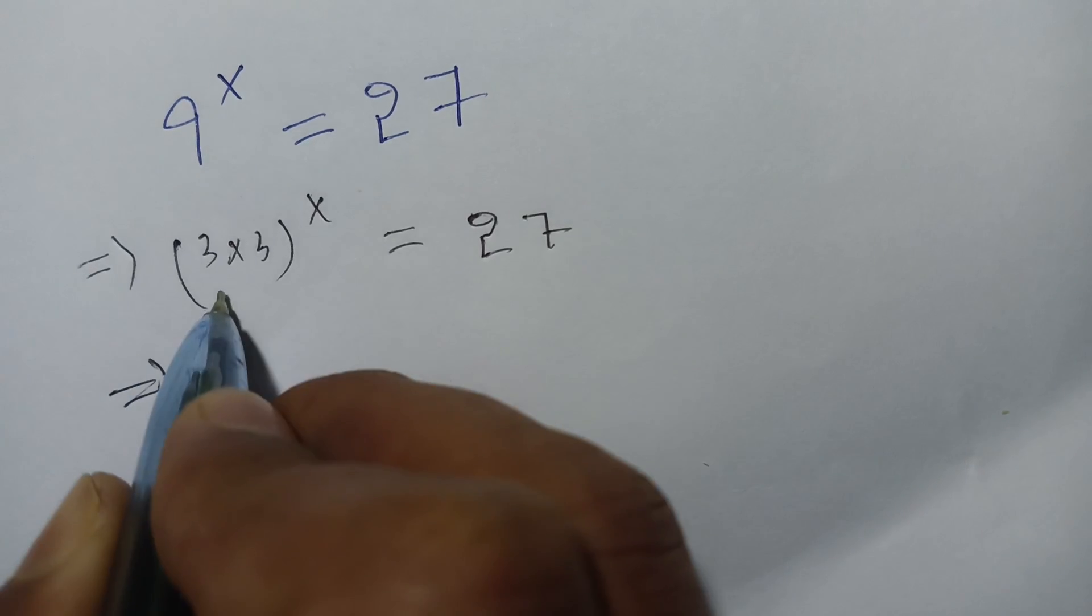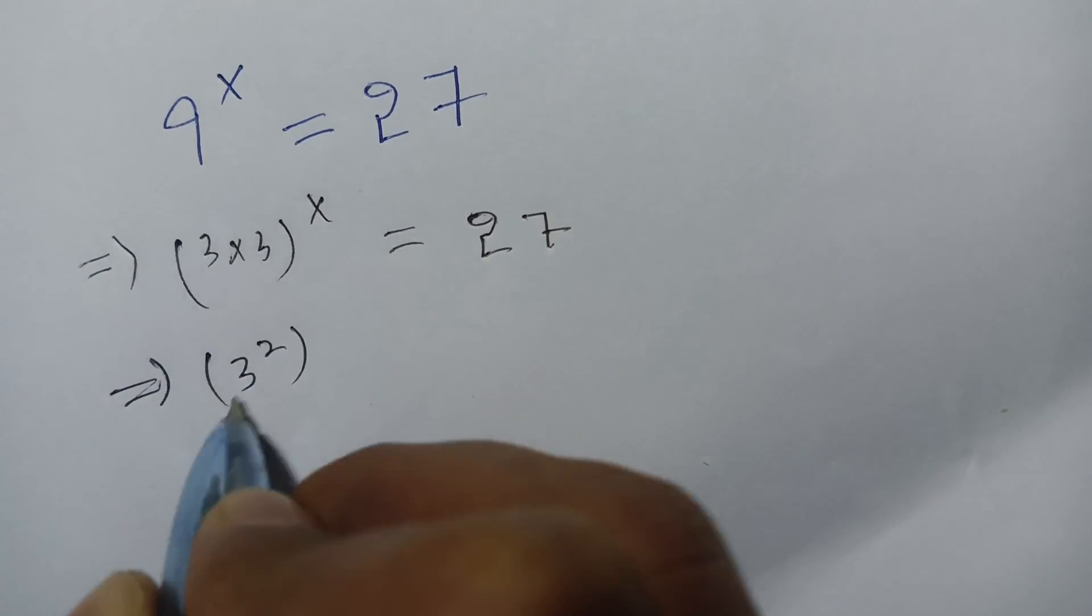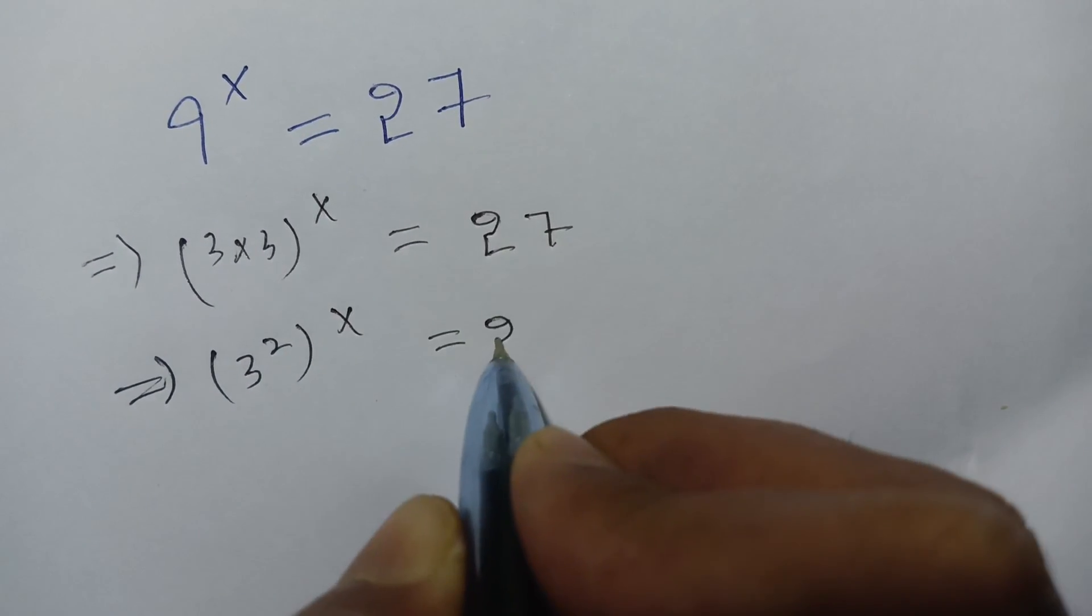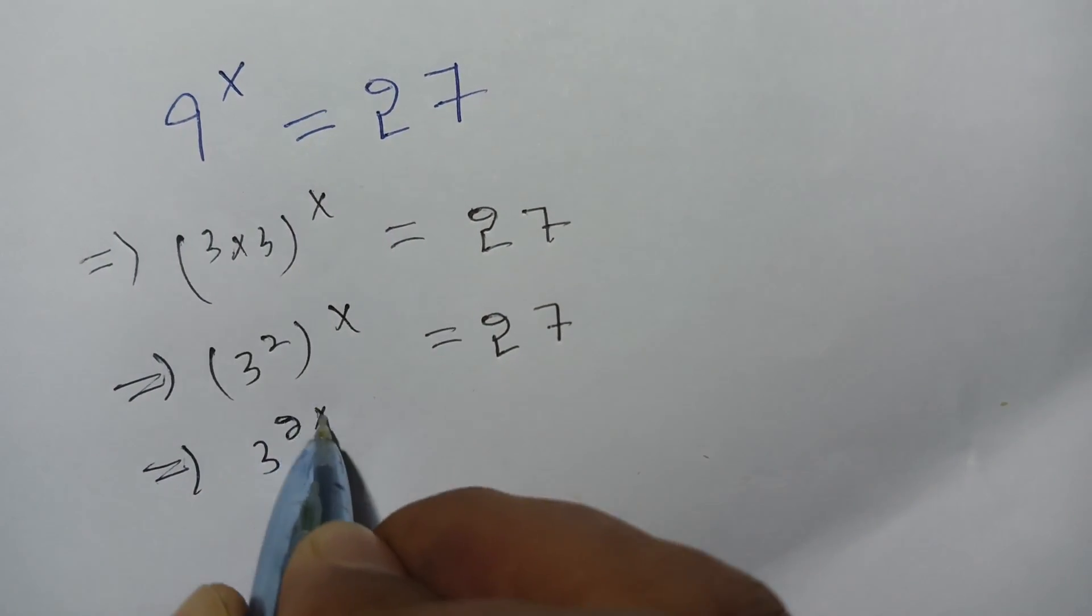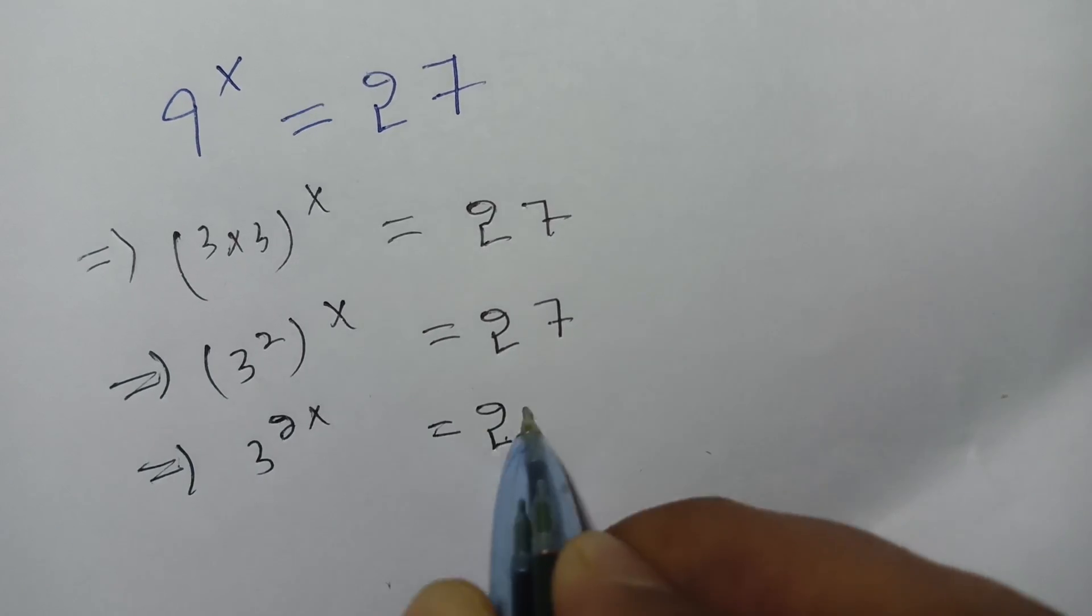We can write it as 3 squared to the power x is equal to 27. So we have 3 to the power 2x is equal to 27.